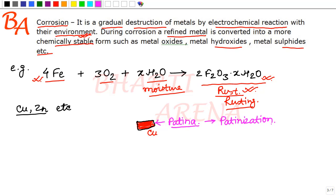This patinization is a natural process which stops further rusting of metals. In this case, we see here that this patinization or rusting is important for metal.